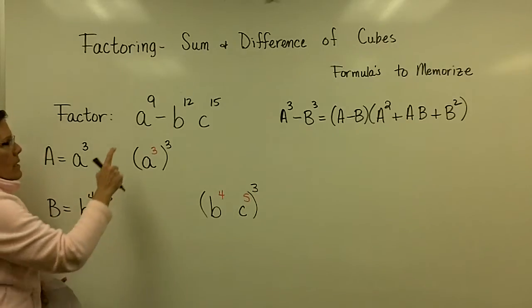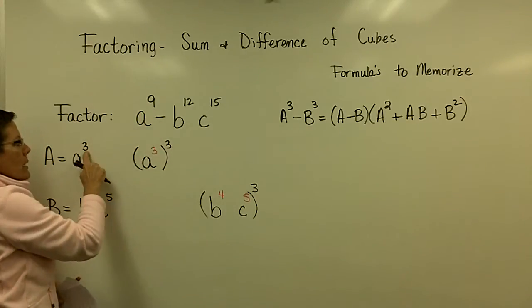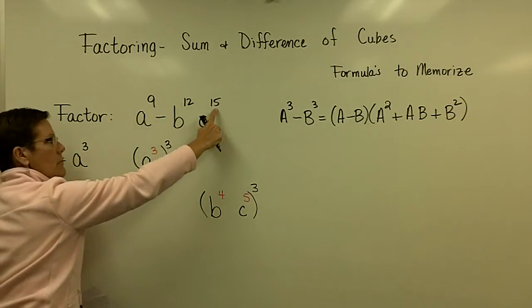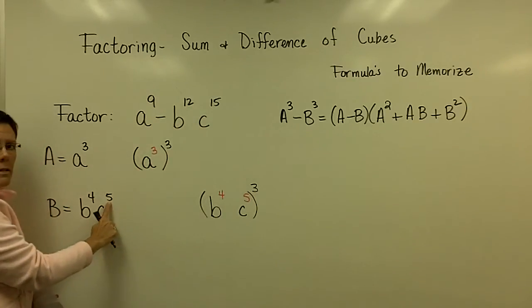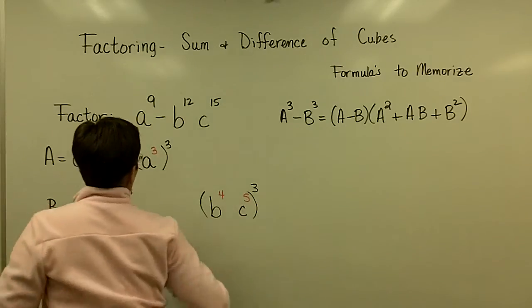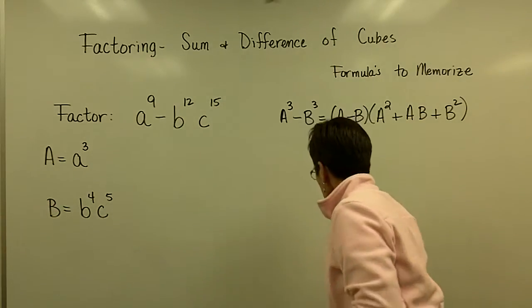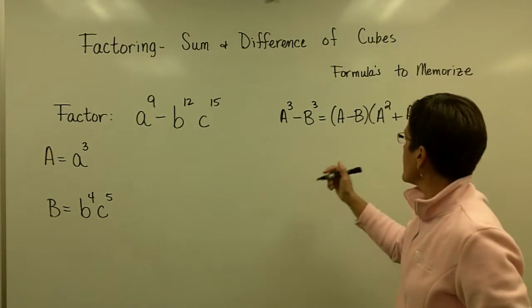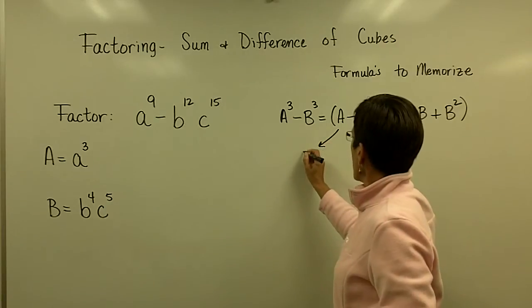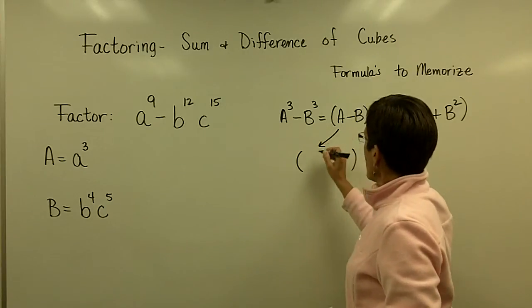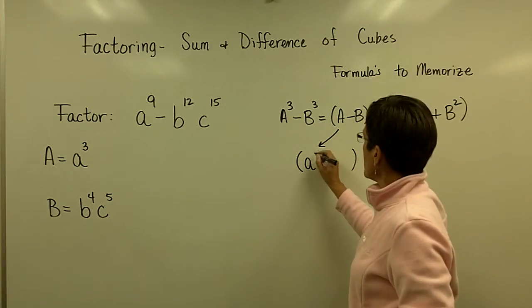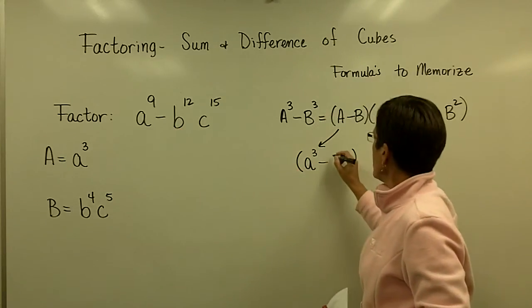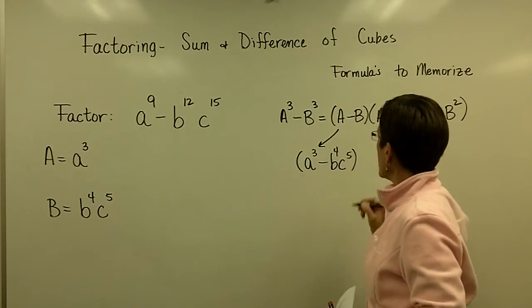Notice that if you took this number and divided it by three, you get your exponent. Divide that by three, you get your exponent. Now I go ahead and put in for my A and B values these expressions. For my A value, I'm going to put in little A cubed minus sign. And my B value is B to the fourth, C to the fifth.